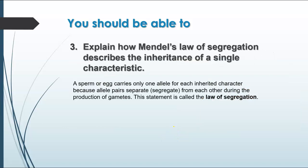Mendel's Law of Segregation is about the fact that when you're inheriting alleles for a particular characteristic, you have two alleles for each characteristic, and your sperm cells or egg cells are going to get either one of those — one or the other — but not both of them. The two alleles are going to separate from each other during the production of gametes that happens in meiosis one and meiosis two, when the homologous chromosomes separate.